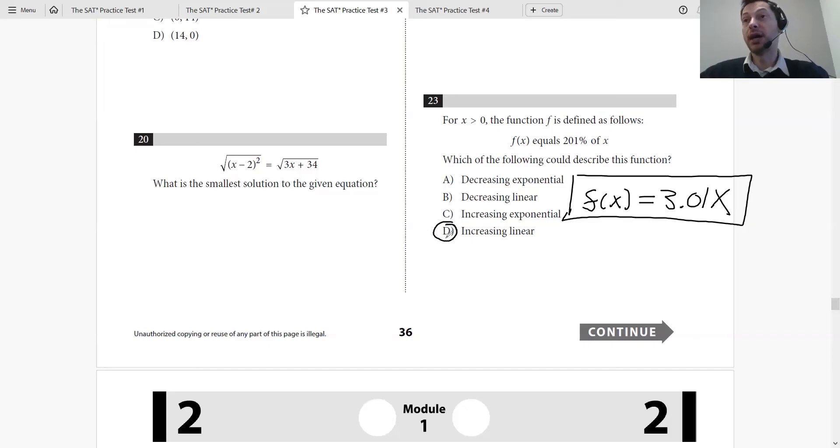So it'd be increasing linear. Increasing because the slope is positive - 3.01 is the slope. And it's a linear function. Let's move on.